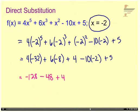And here's our plus 4, and now this multiplication, minus 10 times negative 2 becomes a positive 20, plus 5.